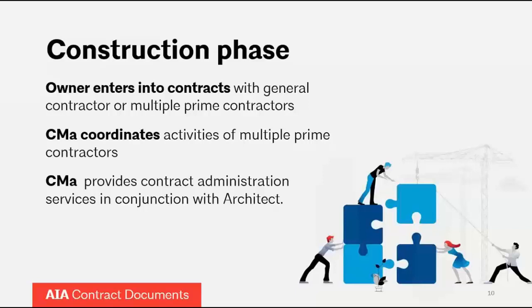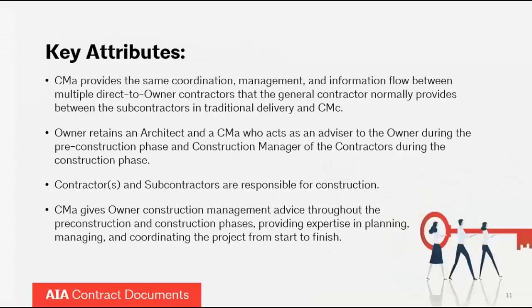During the construction phase, the owner enters into contracts with either the general contractor or multiple prime contractors. The CM is going to coordinate the activities of multiple prime contractors if that scenario exists on the project. Then the CM is going to provide contract administration services in conjunction with the architect. The CM as advisor provides the same coordination, management, and information flow between multiple prime contractors that a general contractor normally would provide between subcontractors in the traditional delivery model.